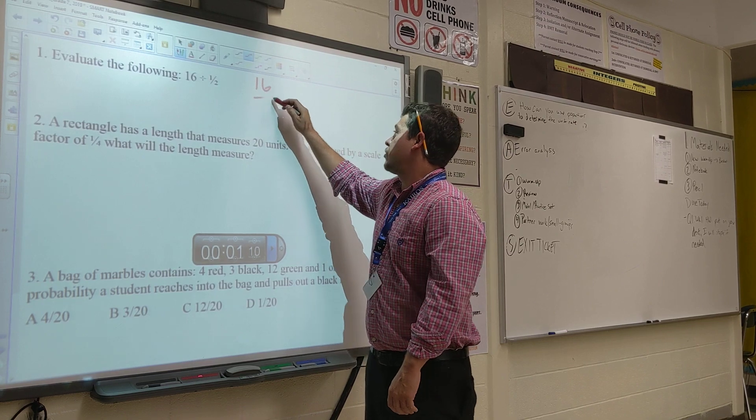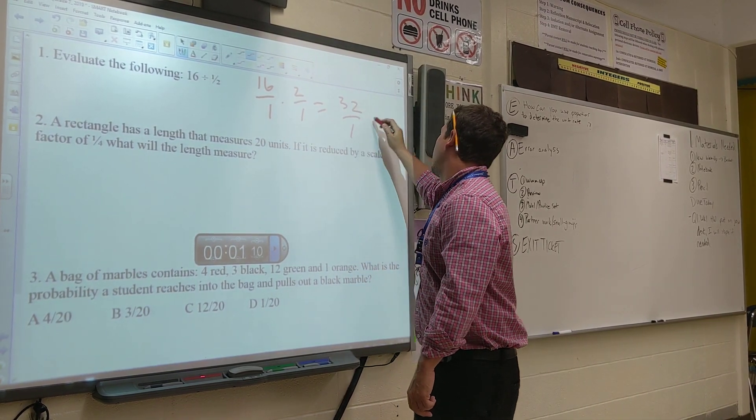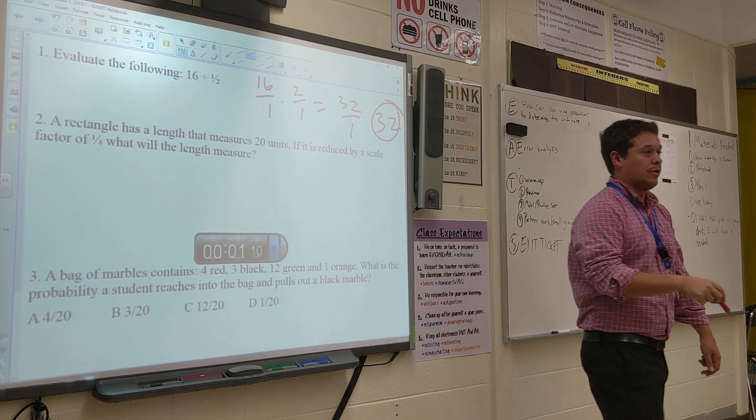Keep the first fraction, change the sign, flip the second fraction. 32 over 1, aka 32. Thumbs up if you got 32 for number 1.